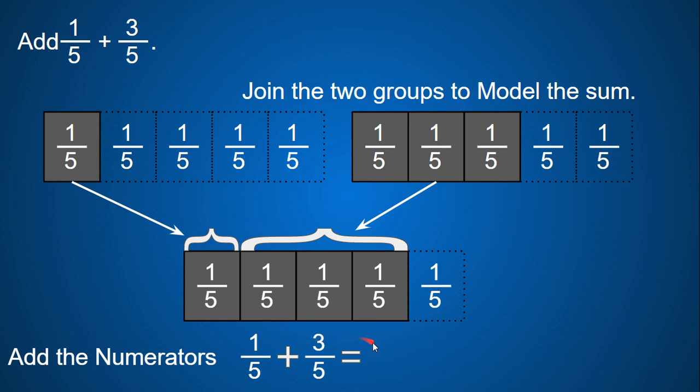One plus three is four, and we keep our denominators the same. So our denominator stays a five. So one-fifth plus three-fifths is four-fifths. This is a model of how we add these fractions.